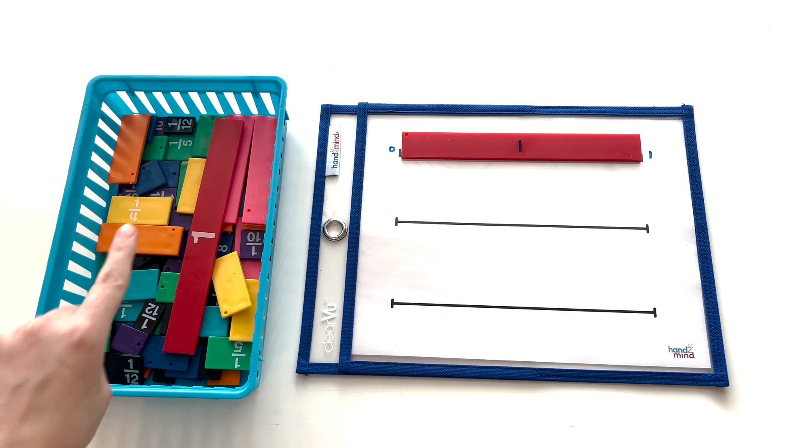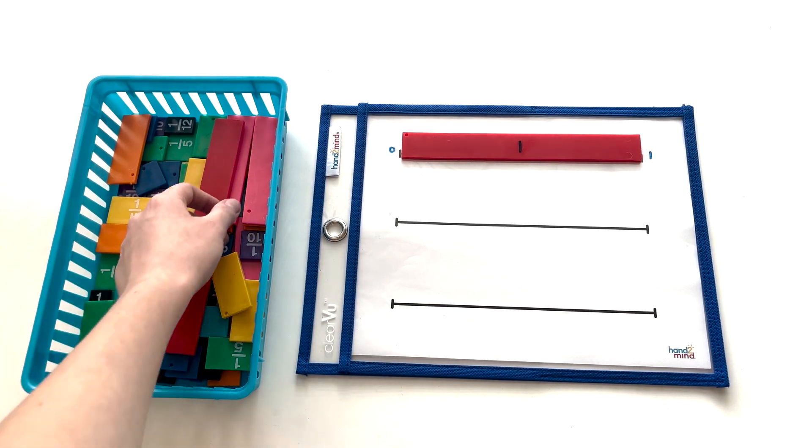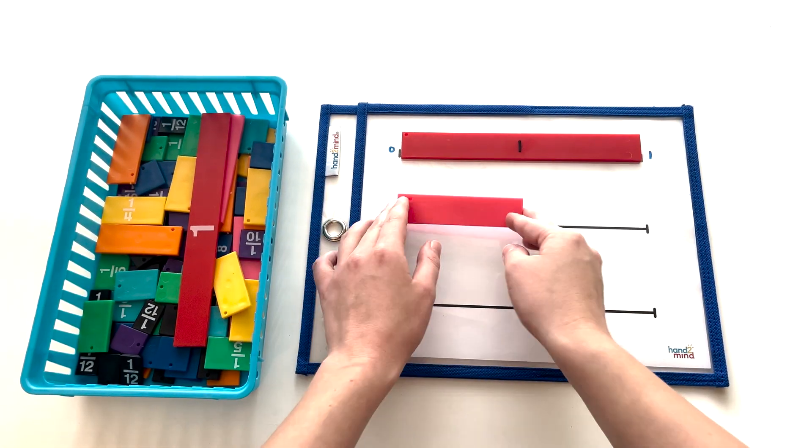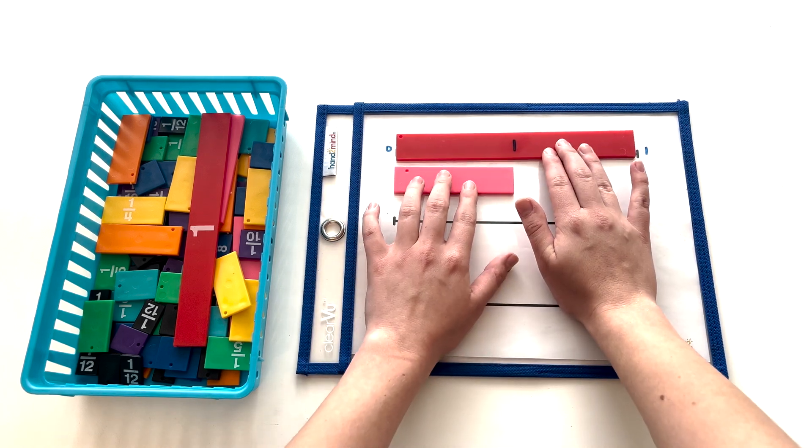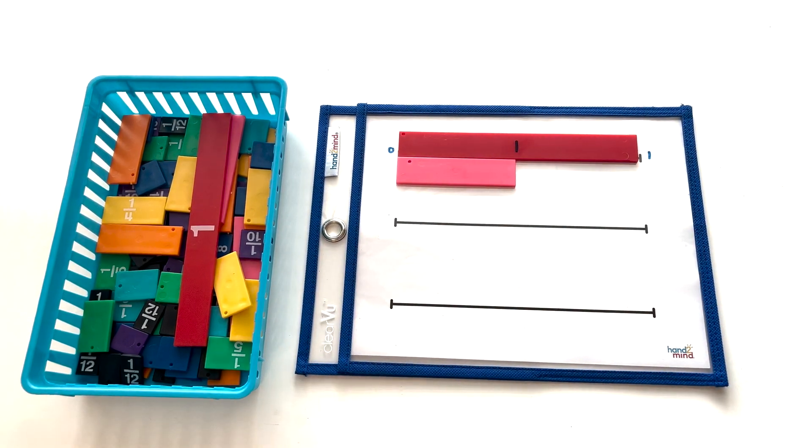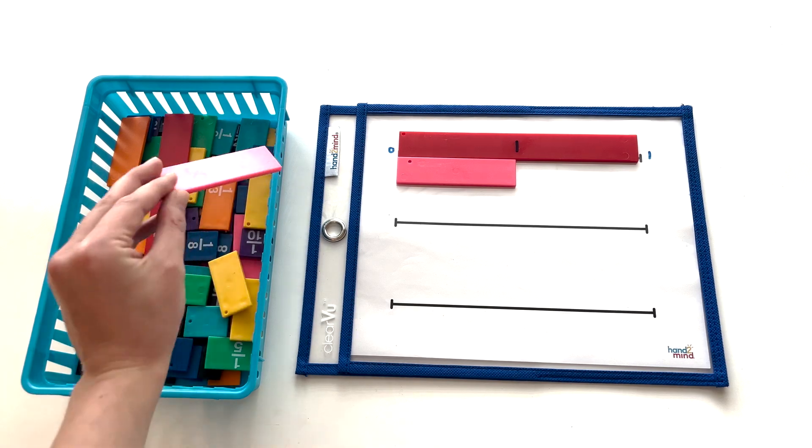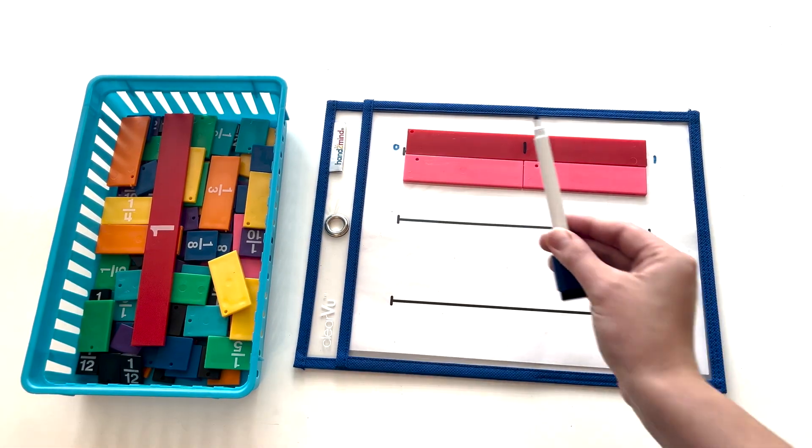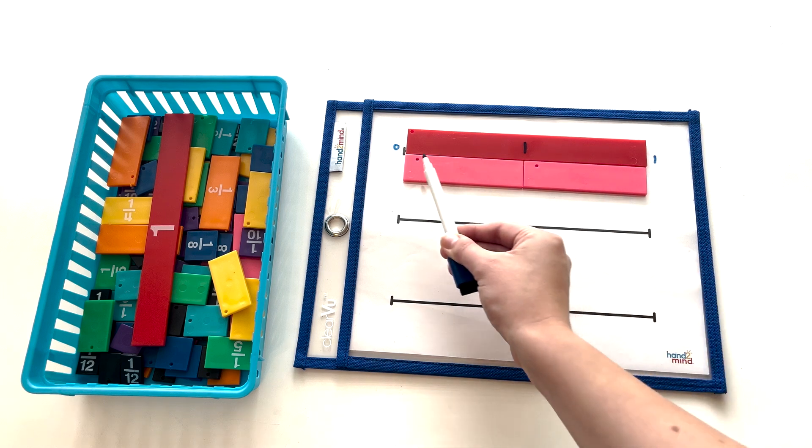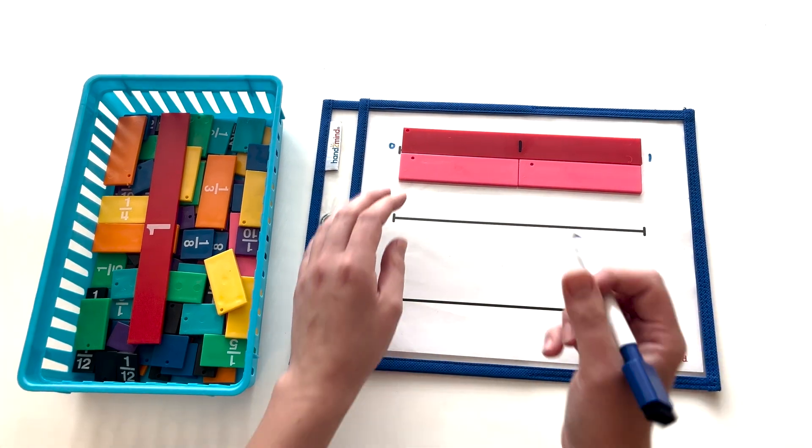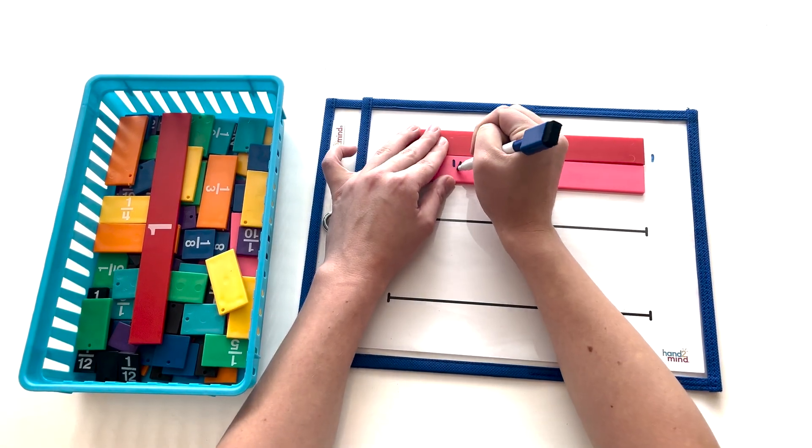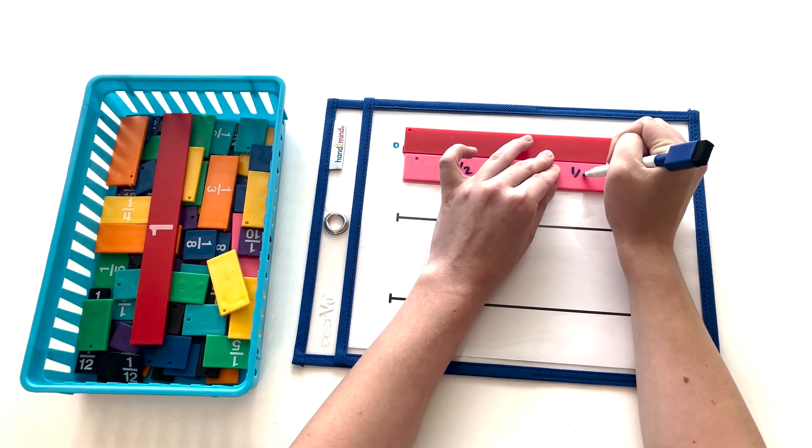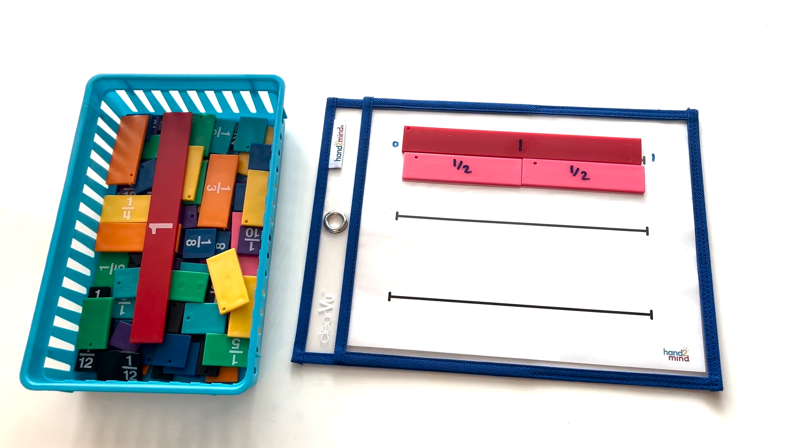Now we're going to work on finding equal fractions and comparing fractions. So let's take out a pink piece and make sure that we align it correctly with the left hand side of our one whole piece. It looks like it will take exactly two of our pink rainbow fraction tiles to equal one whole. Since we know it takes two to equal one whole, each of these pink rainbow fraction tiles is equivalent to one half.